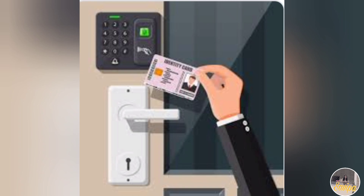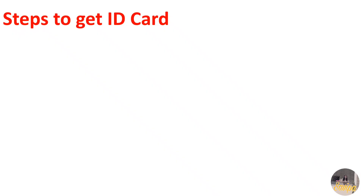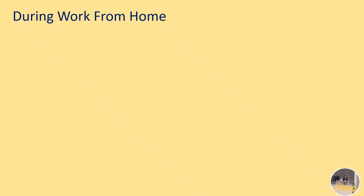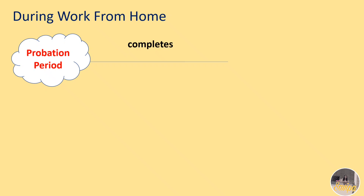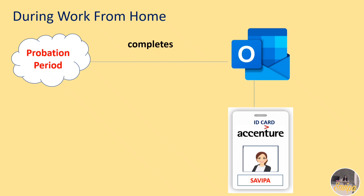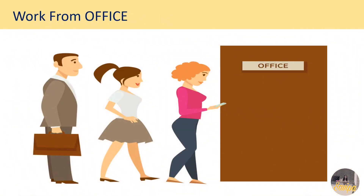Let me tell you the steps to get the ID card in Accenture. As soon as you complete your probation period, you will receive a mail saying 'Congratulations, your probation period has been completed.' After this, within a few days, you will receive another mail — this is the first step to get your ID card. Through this mail only you will be getting the ID card.